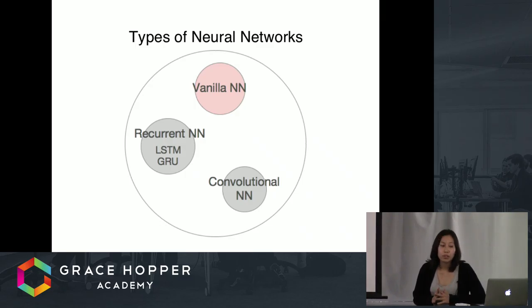There are different types of neural networks. Convolutional neural networks and recurrent neural networks are very popular today. But today we're going to talk about the very basic vanilla neural network or artificial neural network.